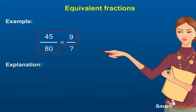We get the equivalent fraction by multiplying or dividing the numerator and denominator by the same number. Now, if we divide 45 by 5, we get 9. So, we divide the denominator that is 80 by 5 to get the denominator as 16. So, the required fraction is 9 upon 16.